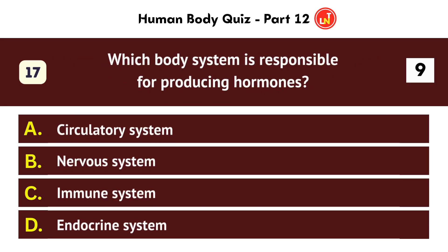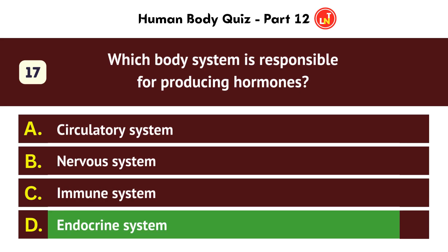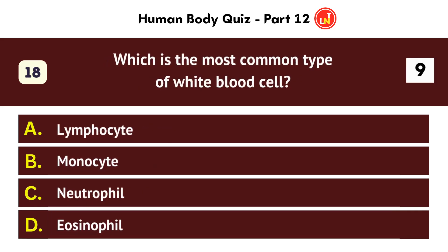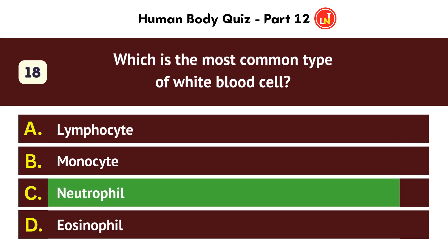Which body system is responsible for producing hormones? Endocrine system. Which is the most common type of white blood cell? Neutrophil.